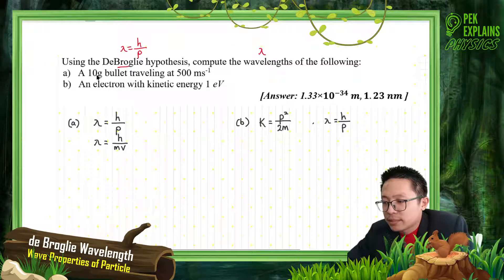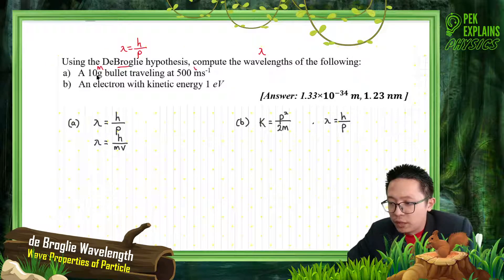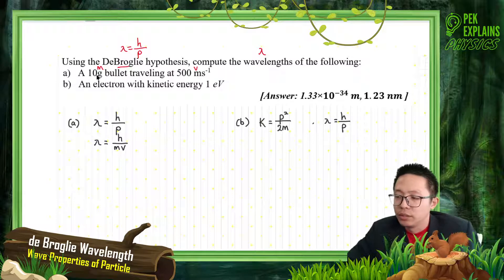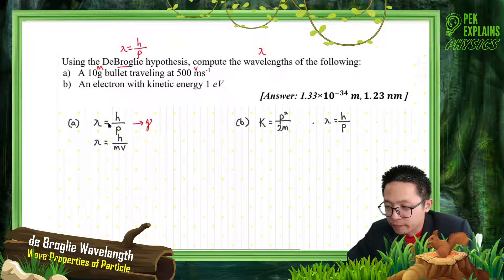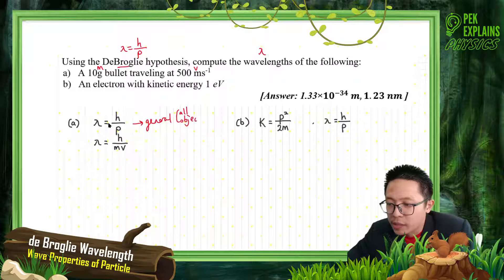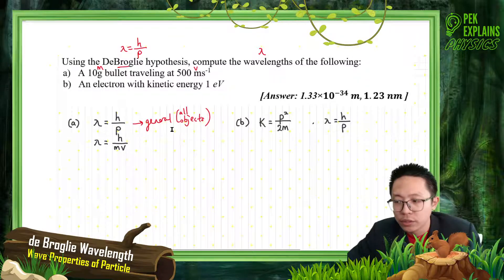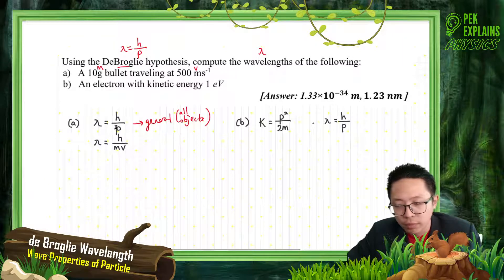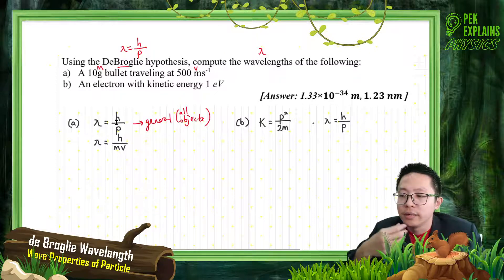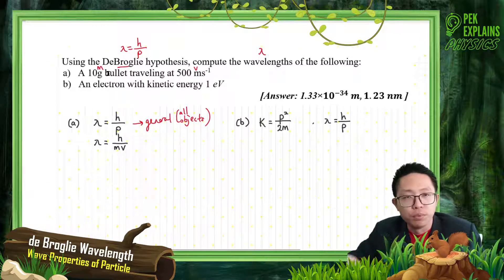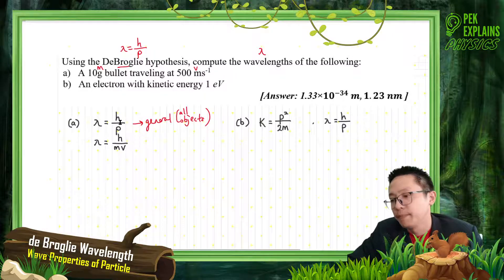As I said, this formula we can use for is general - is general for all objects. I explained already in my lecture video, this de Broglie formula is general, can be used for any object. That's why this de Broglie formula is also used for bullets, even for a ball, for human beings - we can always use this de Broglie wavelength formula.